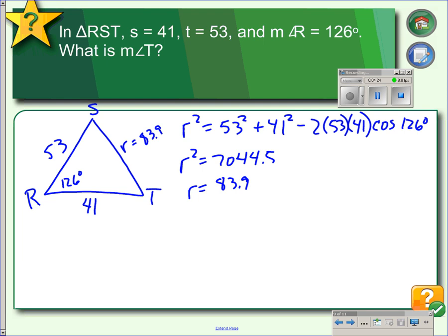This should make sense that this side is the longest because it's across from an obtuse angle of 126 degrees. Then we can find angle T by using the Law of Cosines. Since we want to find angle T, we're going to have side T² on the left, and then we take our other two sides, square them, and subtract 2 times those other two sides. First, we square 53, square 41, square 83.9, and multiply 2 times 41 times 83.9.